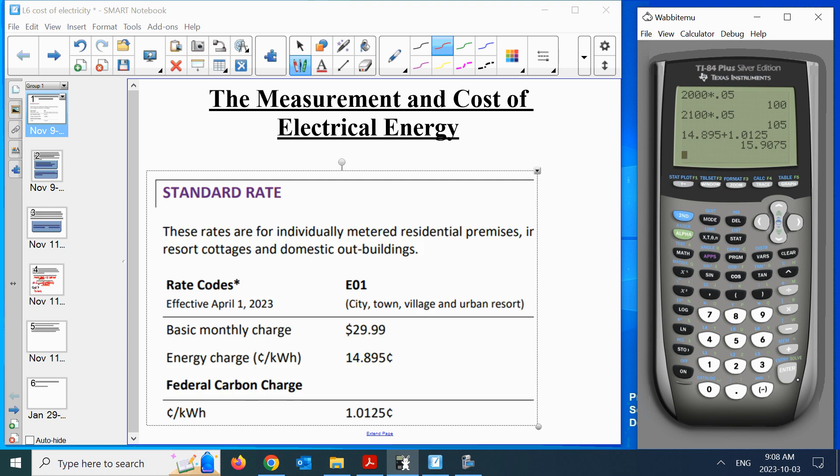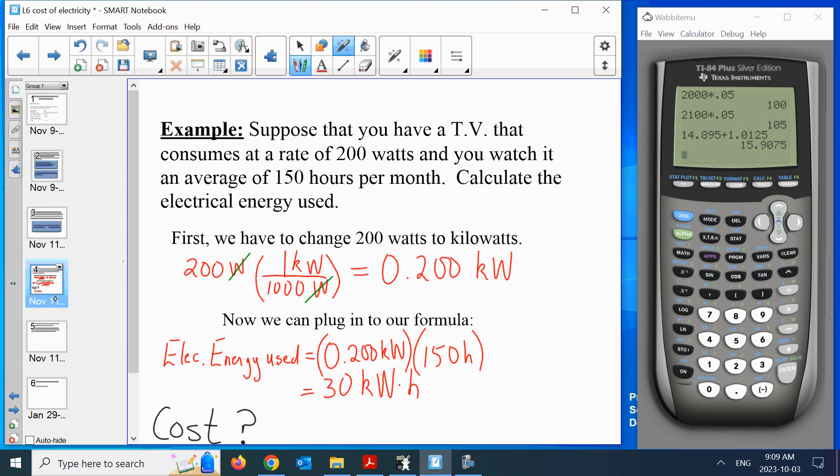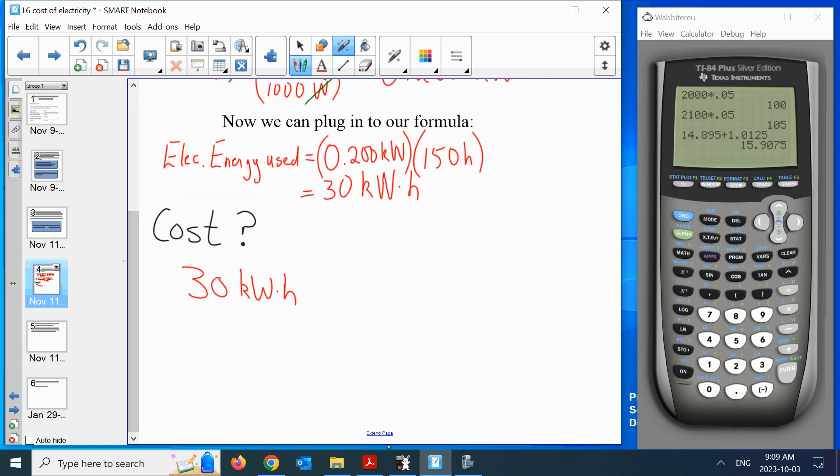As mentioned before, the basic monthly charge is 30 bucks whether you use a lot of electricity or not. That's 14.895 cents and then the 1.0125. I'm going to add those up right now in my calculator because you basically get charged both. I'm not going to keep them separate. Could I use that calculator? So I'm 14.895 plus 1.0125. That's 15.9075 cents per kilowatt hour.